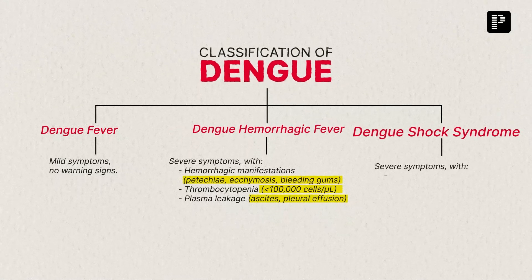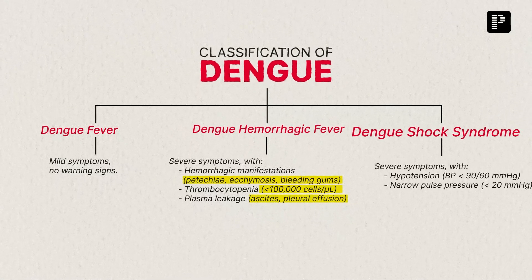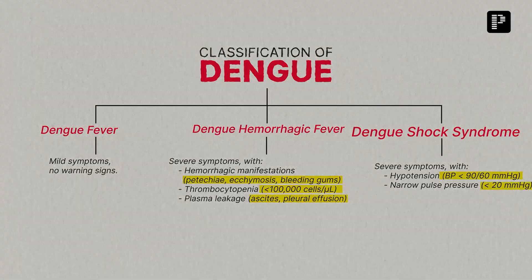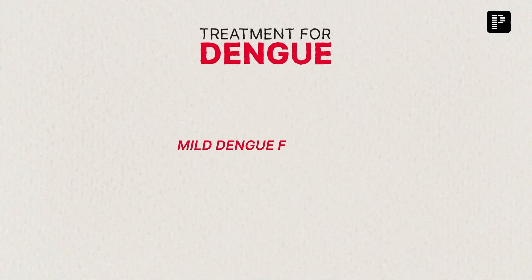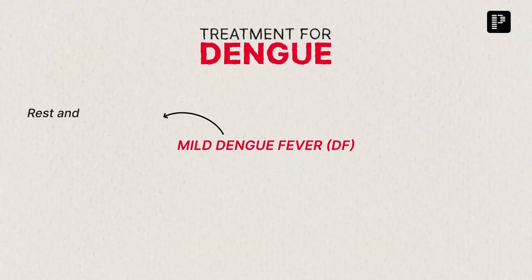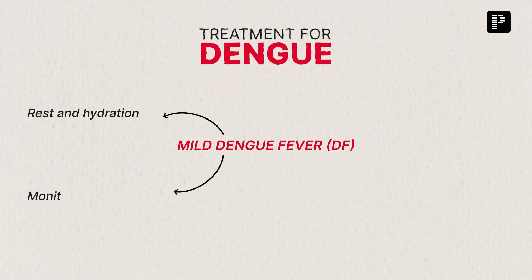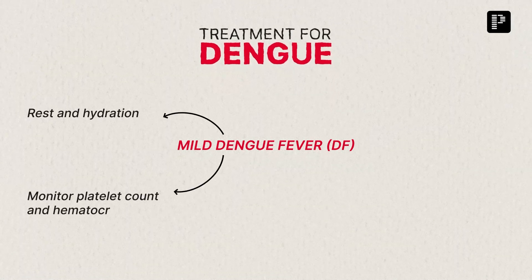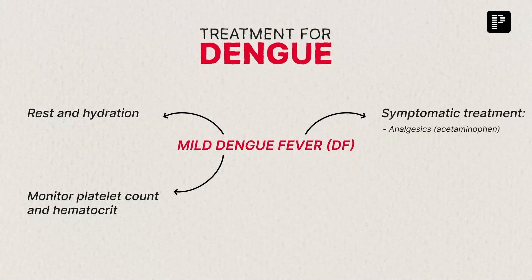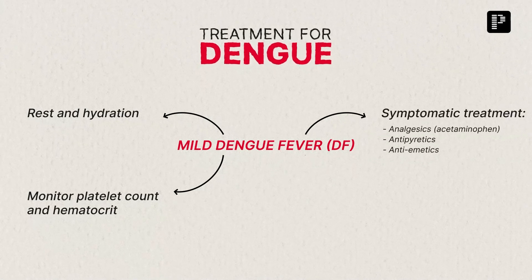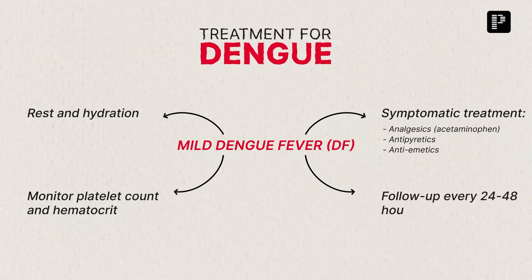Dengue Shock Syndrome is a critical condition characterized by hypotension and narrow pulse pressure. For mild Dengue Fever, encourage rest and hydration. Monitor the patient's platelet count and hematocrit. Use symptomatic treatment including analgesics and anti-emetics to control nausea. Follow up every 24 to 48 hours to monitor progression.